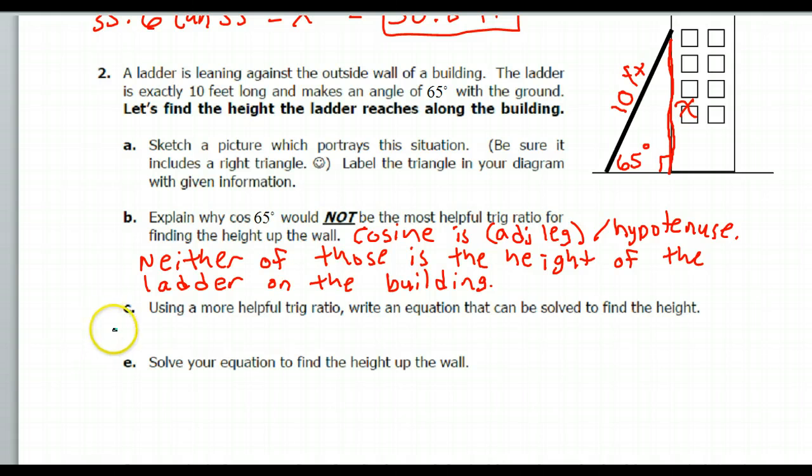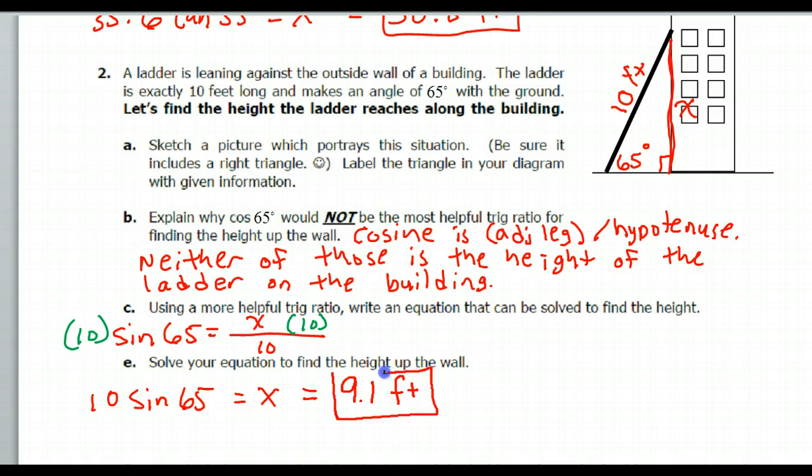The height of the ladder on the building. So that would be sine 65 is equal to x over 10. Solving that equation would mean multiplying both sides by 10. So in other words, 10 sine 65 will equal x. Calculator, that is 9.1 feet up the wall. That's how high the ladder would reach.